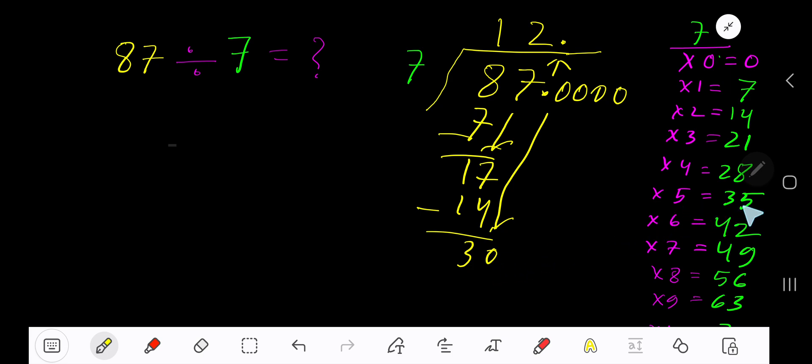4 times. 4 times 7 is 28. Subtract to get 2, bring down another 0.